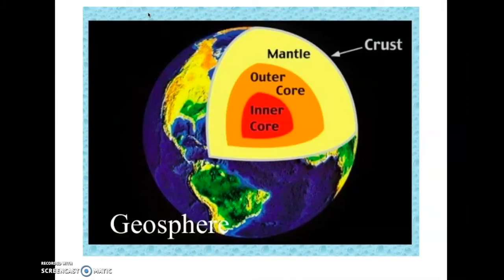Next, we see a diagram that shows us the different layers of the geosphere. The outer layer is called the crust, which is the layer that we live on. Underneath it is the mantle, and underneath the mantle are the two layers of the core: the outer core and the inner core.